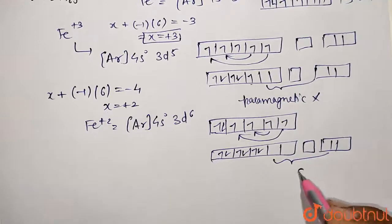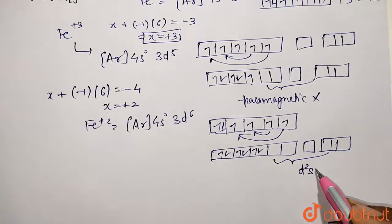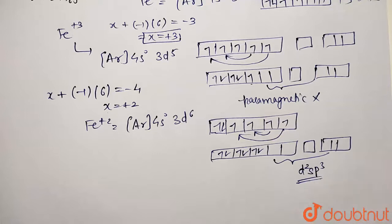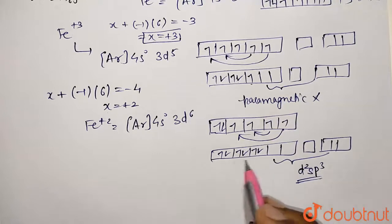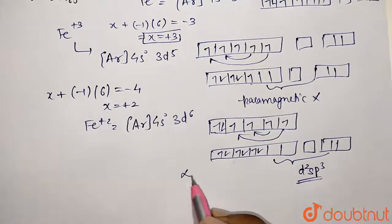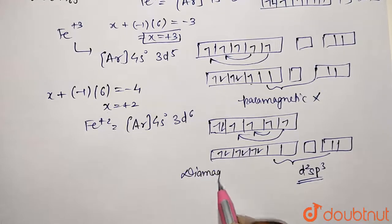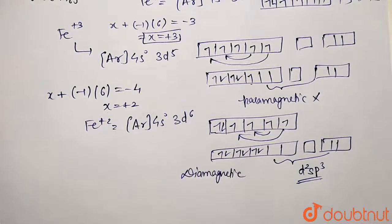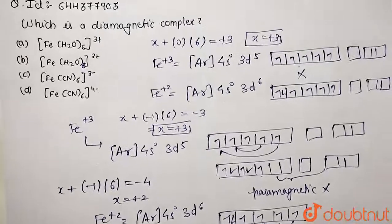So it's going to undergo inner orbital type of complex and hybridization is going to be d2sp3. So overall complex will be octahedral where inner orbital complex will be formed. What we are interested in: magnetic nature. So it's going to be completely paired, so diamagnetic is the nature. So our answer is going to be option D which is diamagnetic in nature. So let's mark the option D.